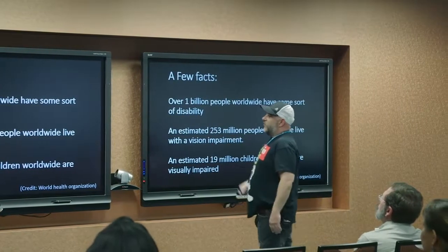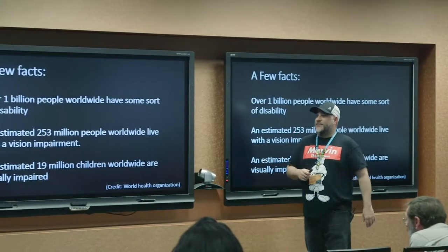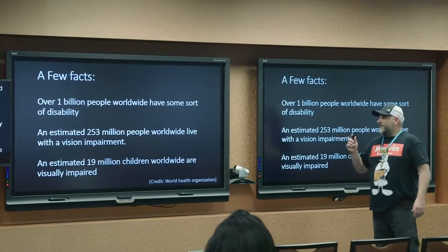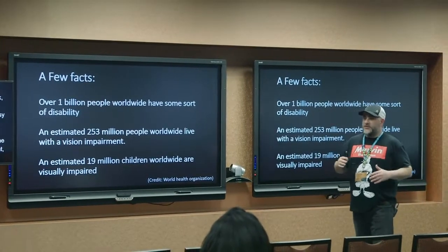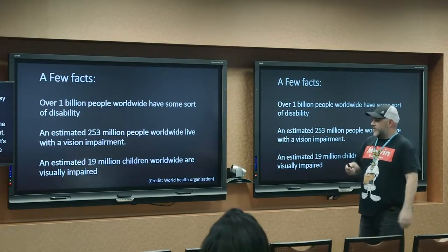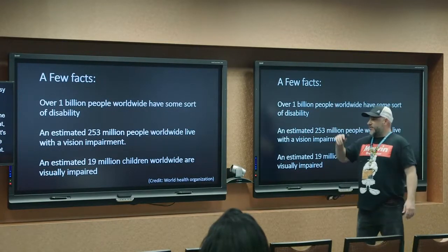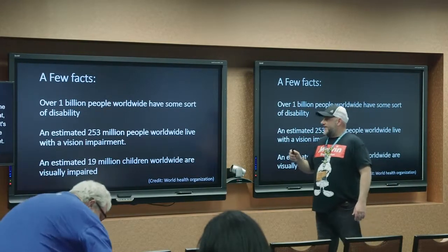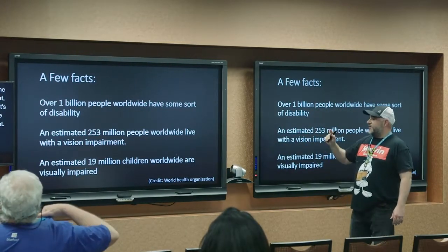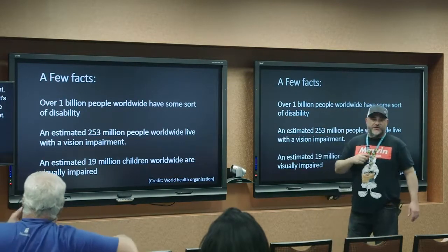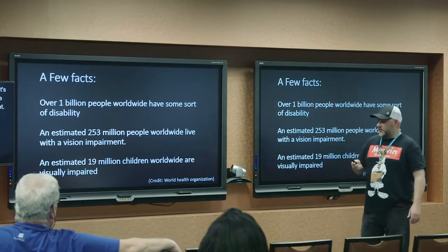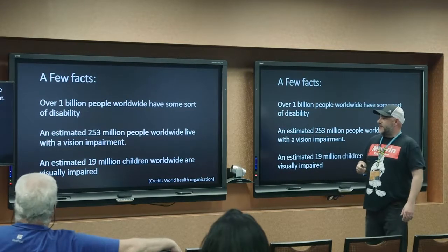A few facts: over 1 billion people worldwide have some sort of disability — that's a big number. Of that, an estimated 253 million people have a vision impairment. That's the group we focus on when it comes to accessibility, because we believe we can reach and help the most people there. Of those 253 million, 19 million are children. I have two kids — watching them interact with technology, they're pretty much one and the same at this point, like little cyborgs. I can only imagine 19 million vision-impaired children.